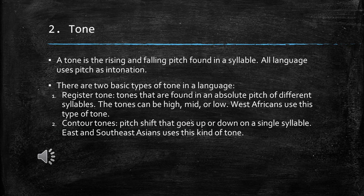Tone: A tone is the rising and falling pitch found in a syllable. All languages use pitch as intonation. There are two basic types of tone: 1. Register tones — tones found at an absolute pitch level for different syllables; the tones can be high, mid, or low. West African languages use this type of tone.